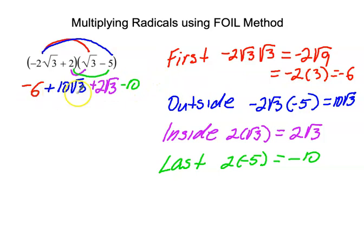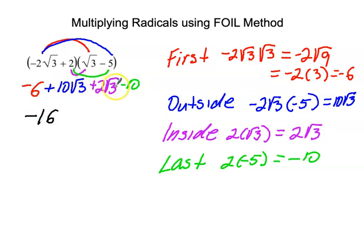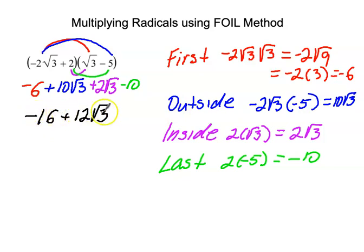We're not done yet — we need to combine like terms. Negative six and negative ten combine to give negative sixteen. Then ten square root of three plus two square root of three equals twelve square root of three. We cannot combine any further because negative sixteen and twelve square root of three are unlike terms — square root of three is irrational. So the final answer is negative sixteen plus twelve square root of three.